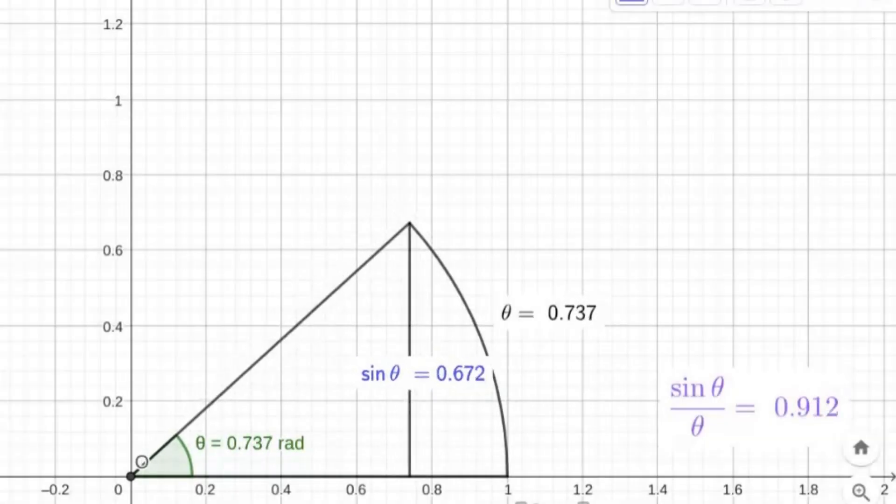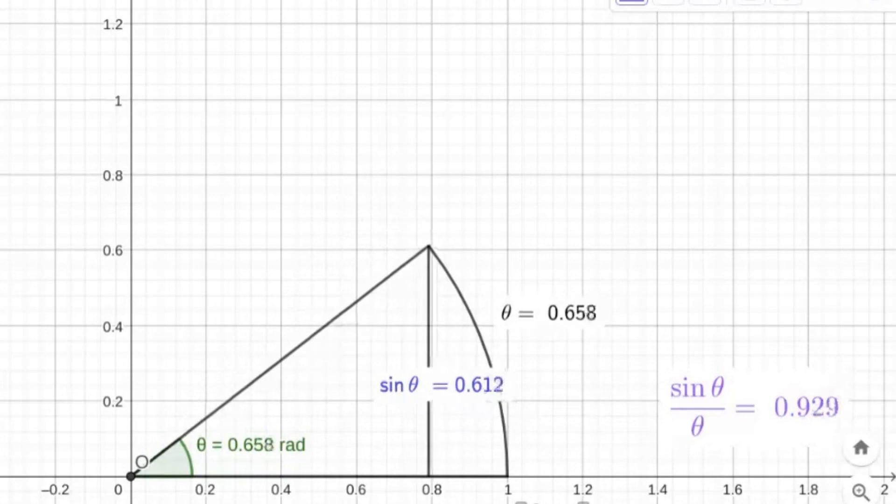But remember when I told you the radian can be used to directly describe an angle as a length? Well, this is where it comes in handy. With this power, we can draw a neat little diagram showing the relation between the two terms.